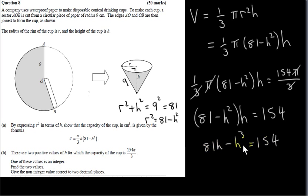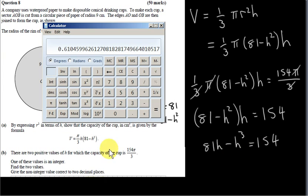If h was any old value, it could take forever to find because h could be a decimal with many places. But since h is an integer, we can just run through integers until we find a solution.